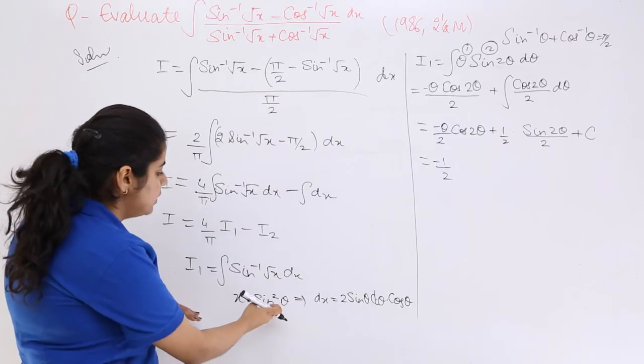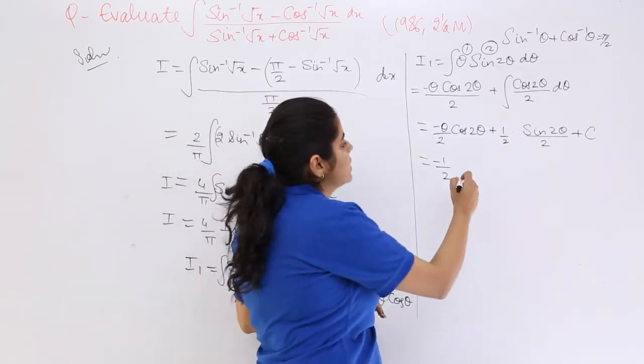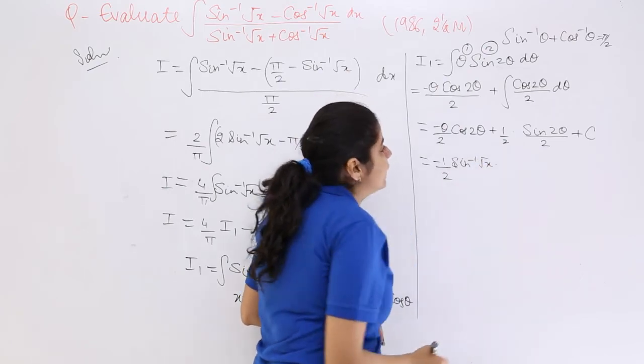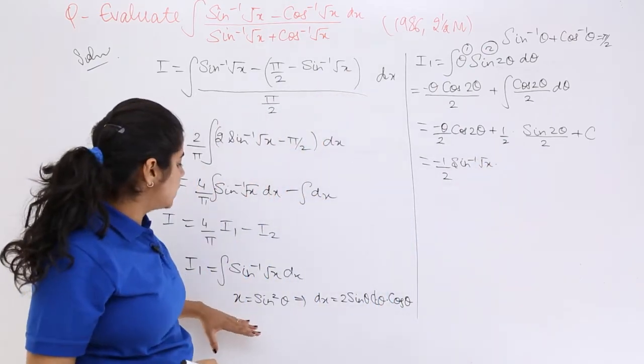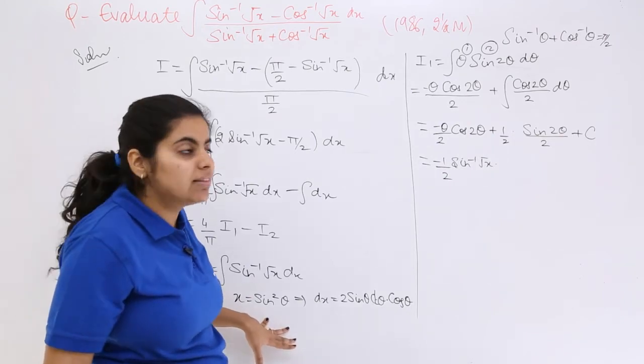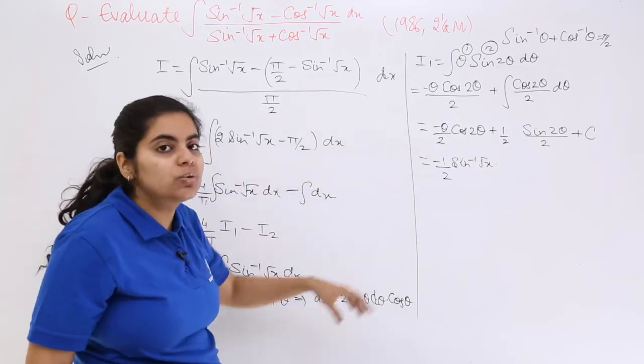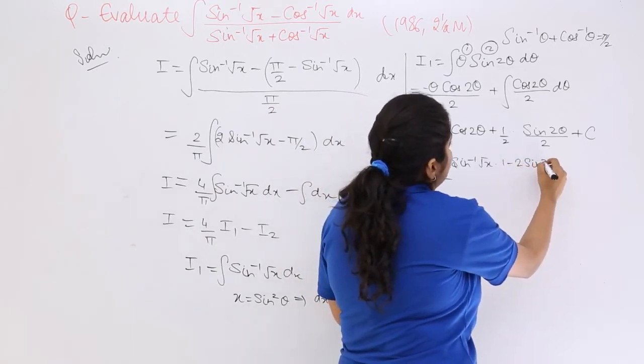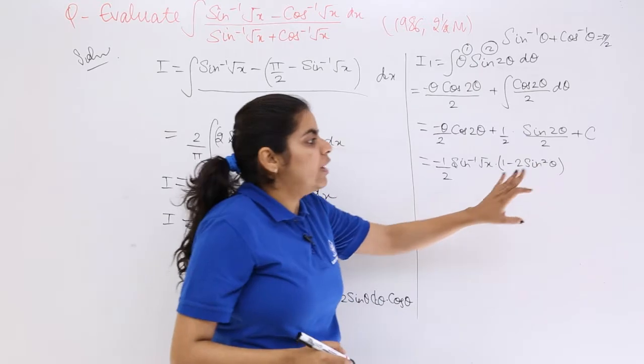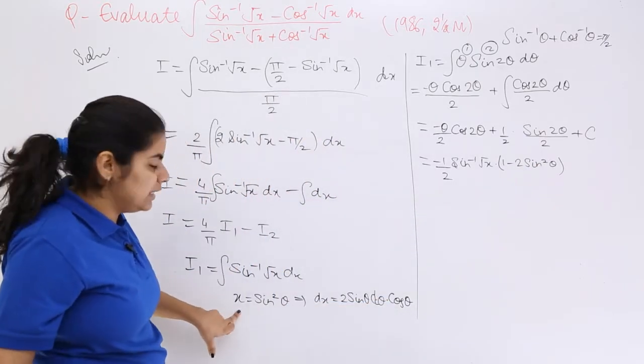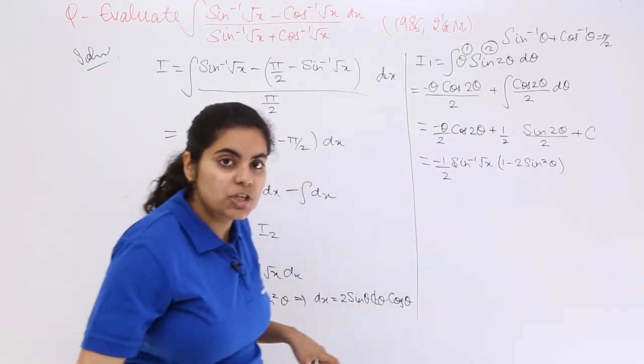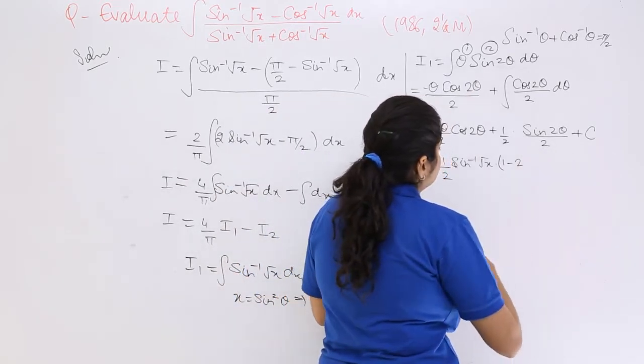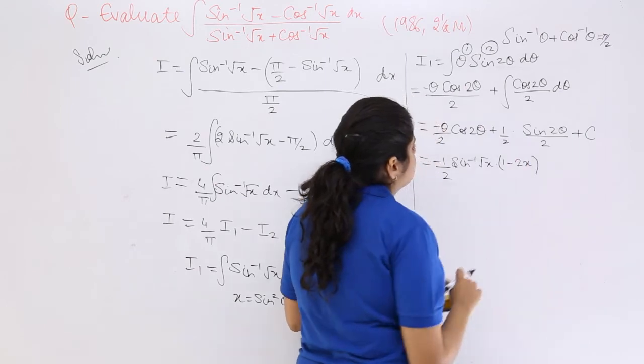Now as you can see, this is minus 1/2. What is theta? Theta is sin inverse root x, multiplied by cos 2 theta. What is cos 2 theta? It is 1 minus 2 sin squared theta. So 1 minus 2x. What is sin squared theta? That is x, so I can substitute it.